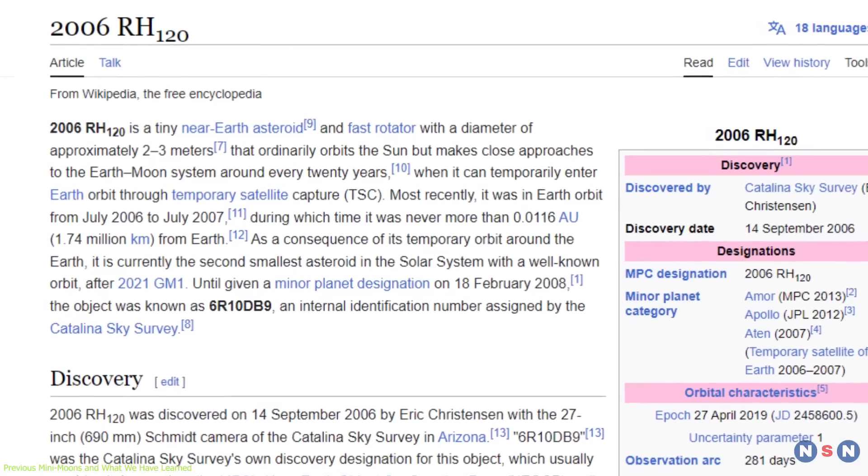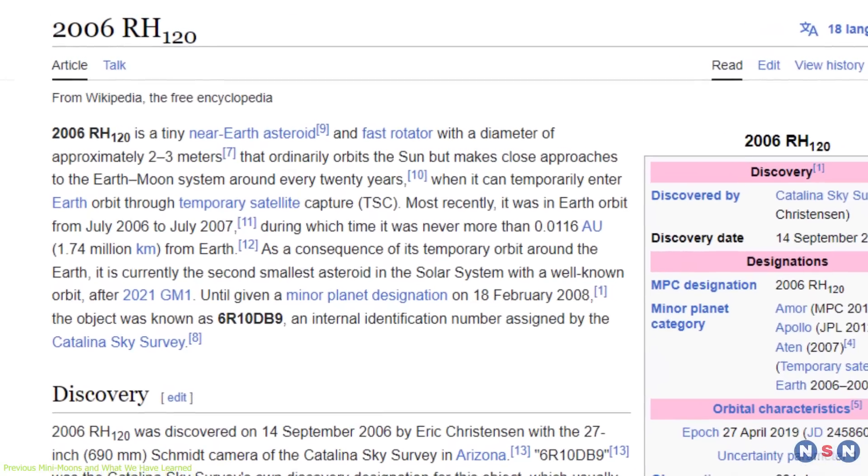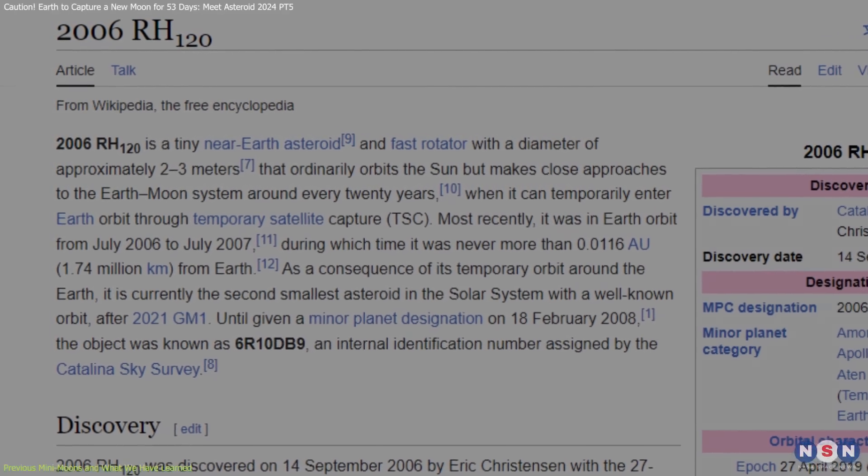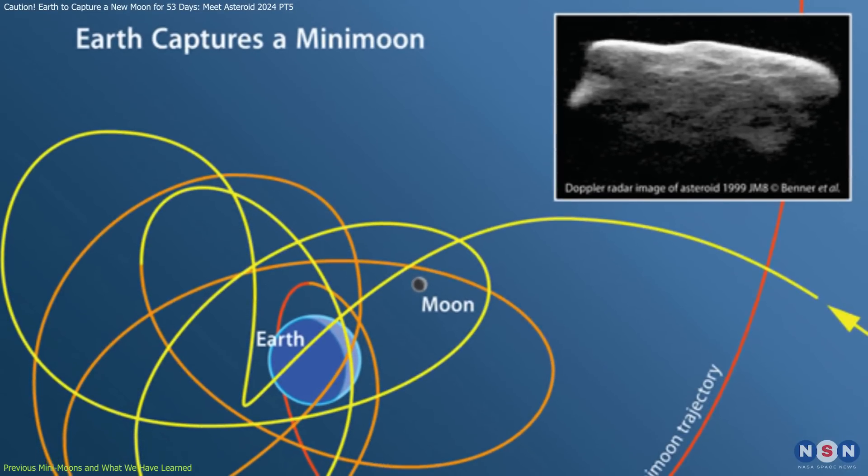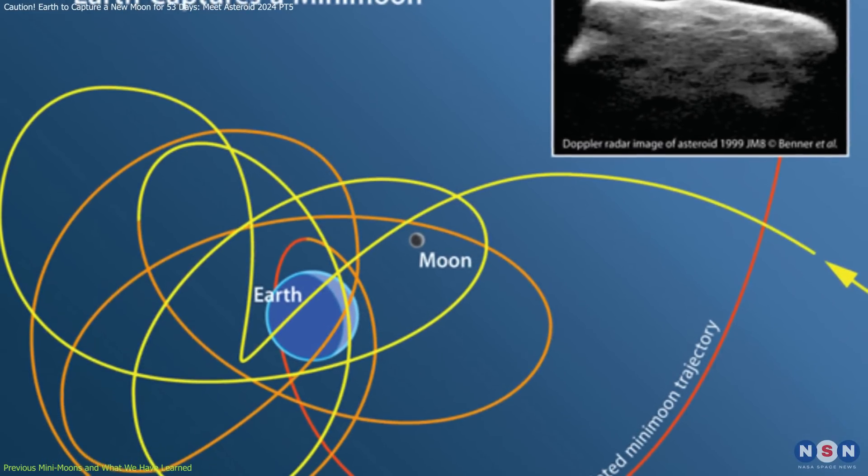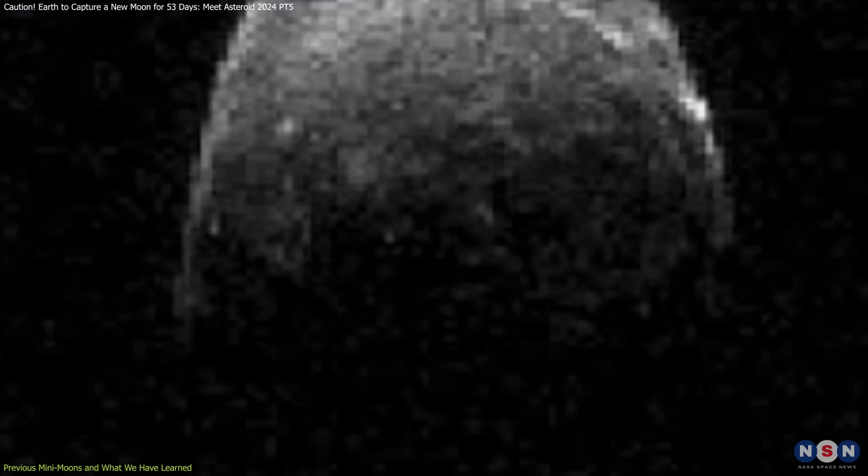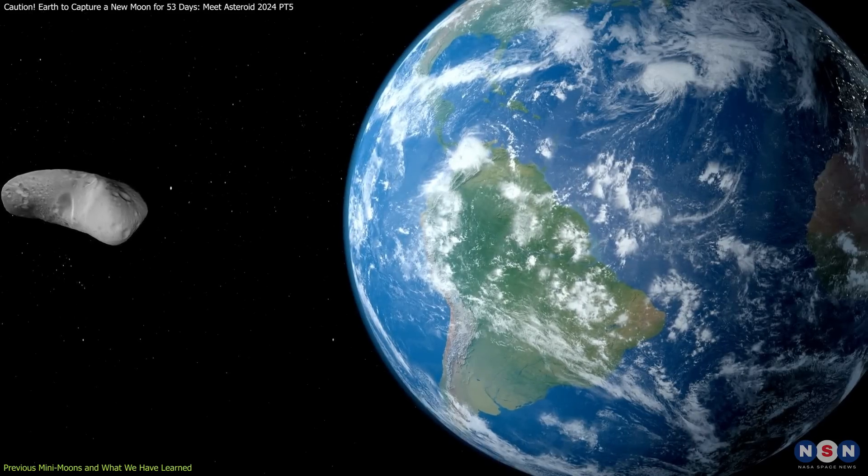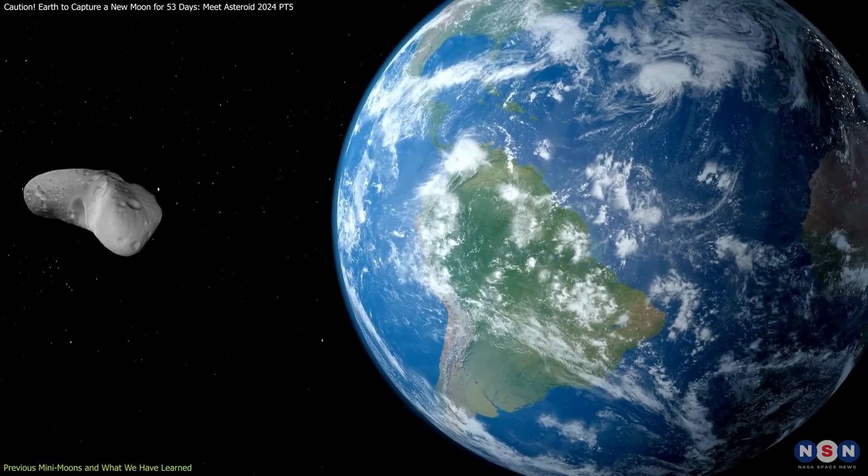One of the most well-documented cases was 2006 RH120, a small asteroid that orbited Earth from 2006 to 2007. This mini-moon was about 3 to 6 meters in diameter and stayed within Earth's gravitational sphere of influence for about a year.